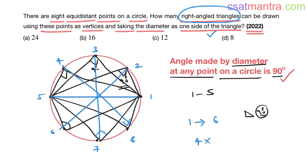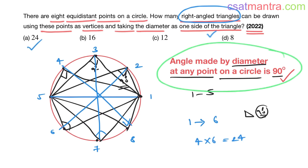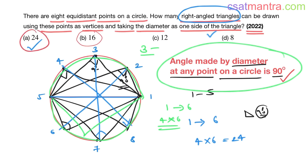Four diameters times six equals 24. The answer is 24. Remember this result: the angle made by the diameter at any point is 90 degrees. In each semicircle there are three right angle triangles — three plus three equals six per diameter. Four diameters gives four times six equals 24. You cannot manually count; you have to observe the pattern: one diameter gives six, four diameters gives 24.